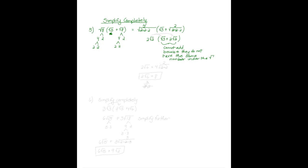Since we cannot add these, we're going to distribute. The things on the outside stay out, so we get two. Square root of two times three is six, plus two times two is four. We see we have a pair here, so we simplify further and bring that two out. So here we have two square root of six plus four times two is eight. This is our final answer.